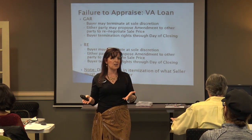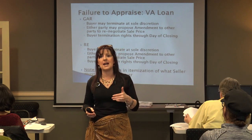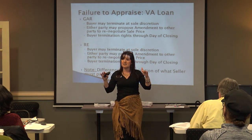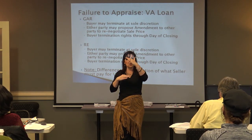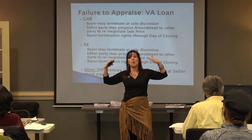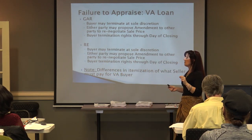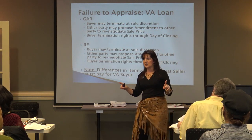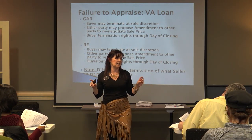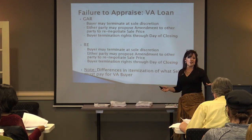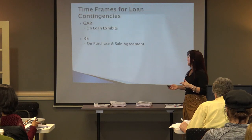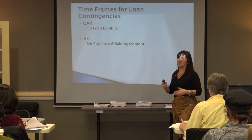The same termination rights apply to the VA loan — buyer termination rights with no penalty go through day of closing, or the buyer may propose an amendment to the seller to renegotiate. VA and FHA are the same as far as appraisal. There are differences in the itemized list in the VA loan exhibit on RE forms versus GAR forms. When a buyer is getting a VA insured loan, there are certain costs the seller is absolutely required to pay on behalf of the buyer. In your packages you have the VA loan exhibits, the FHA loan exhibits, temporary occupancy, and other forms, referenced in the handout.